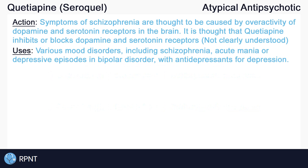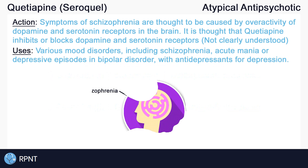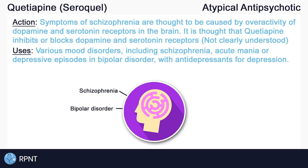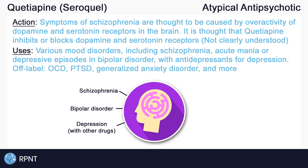Quetiapine is used in the management of various mood disorders, including schizophrenia, acute mania or depressive episodes in bipolar disorder, and may be used in combination with antidepressants in the treatment of depression. Remember that, as an atypical antipsychotic, quetiapine can treat both positive and negative symptoms. Some of the off-label uses of quetiapine include obsessive-compulsive disorder, post-traumatic stress disorder, generalized anxiety disorder, and more.